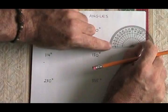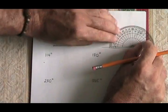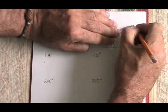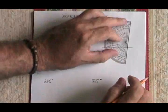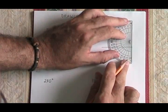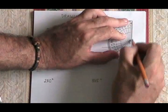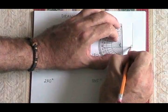this time I need to use the outer set of numbers. I follow those numbers until I get to 90 and I put a dot. And then I draw a line between that dot and the vertex I started from. And I have created a 90 degree angle.